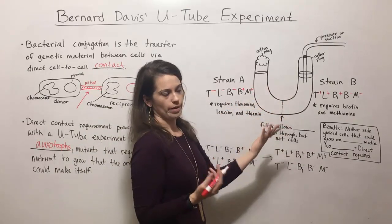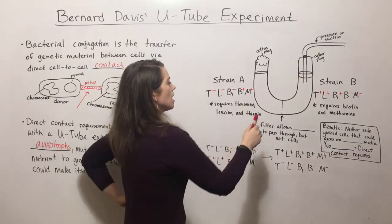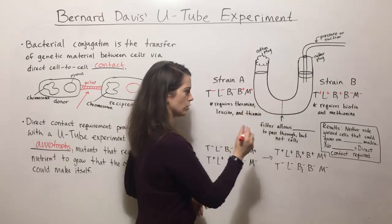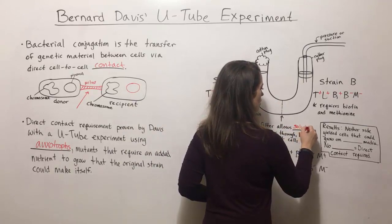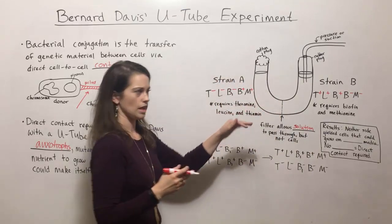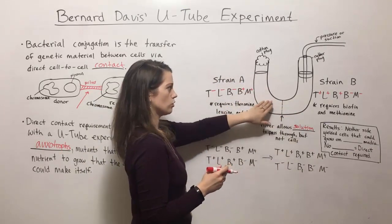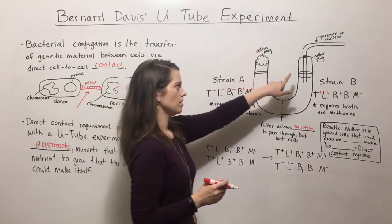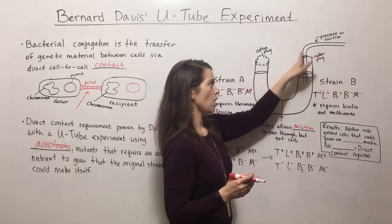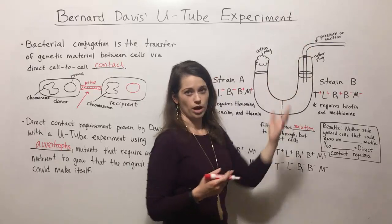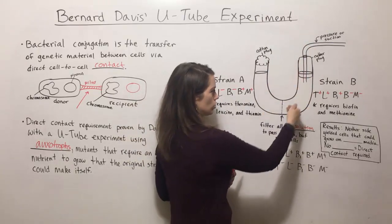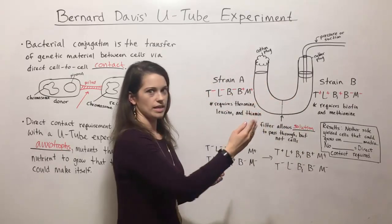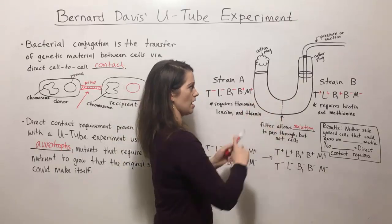He set up this U-tube experiment — called U-tube because the tube is in the shape of a U — and there was a filter in the middle. The filter would allow solution from either side to pass through, but not the cells. So the solution could move through these pores, but the cells themselves were sequestered on either side. Strain A was added to one side, Strain B to the other. There is a cotton plug on one end and a rubber plug on the other end with a hollow glass tube used to apply either pressure or suction, pushing or pulling the solution back and forth, while the cells had to stay on either side.